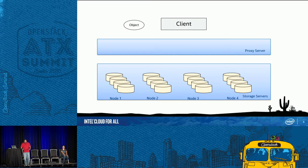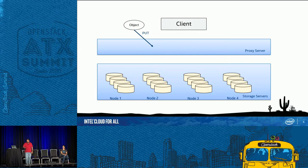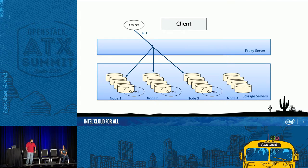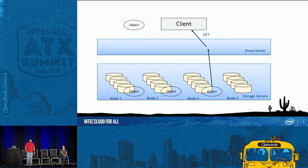Let's look at how Swift works. There are four nodes, each an object storage node. When a client does a PUT request to the proxy server, the proxy finds three particular nodes where the object has to be stored. It uses a ring implementation to determine predefined locations, and the object is written to all three. This is the replication model. Swift also supports erasure coding — using 1.5x the space instead of 3x. When you retrieve an object, the client does a GET request, the proxy finds the closest node, and passes the object back to the client.